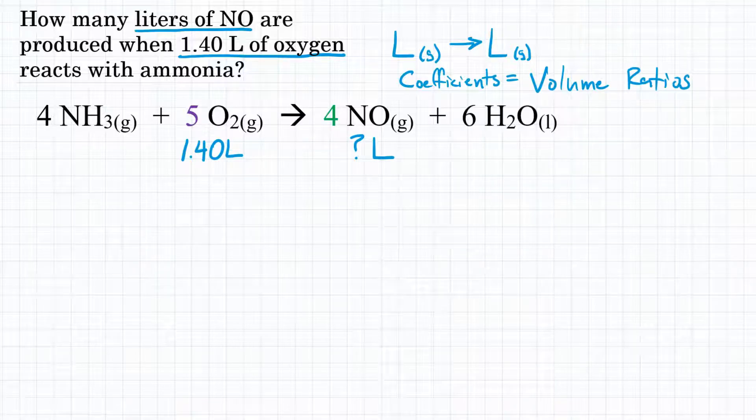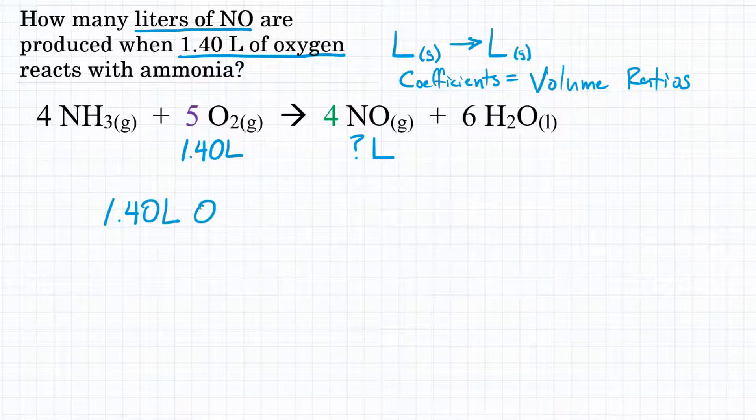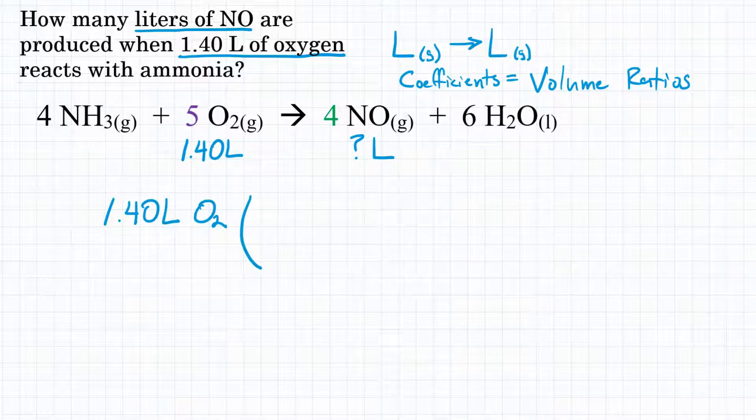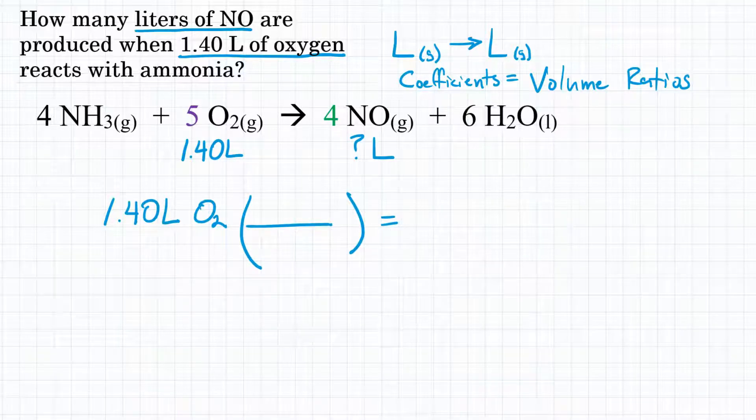To set up this problem, we start with 1.40 liters of O2 and multiply by one conversion factor to get to liters of NO.